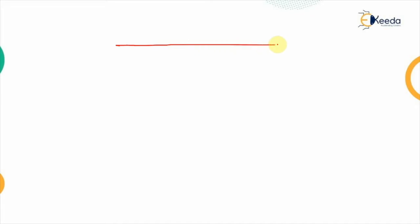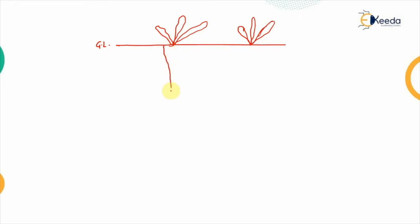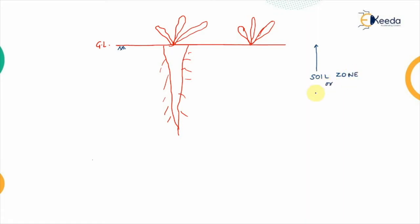Let's say this was the ground level on which the crop was present. We are magnifying that region. There are a number of crops present alongside this ground level, with a certain root zone extending in the downward direction. This represents the root zone of the plant, and this is representing the soil moisture level. The region we are going to study is the soil zone or the root zone.